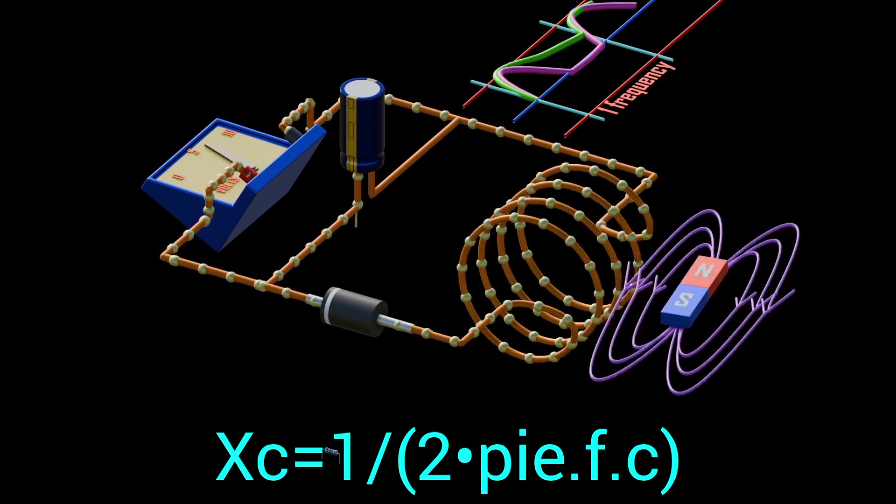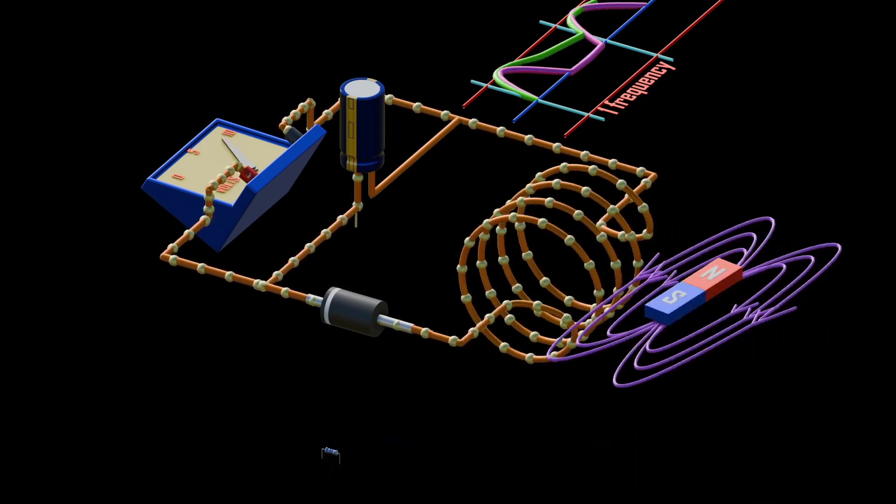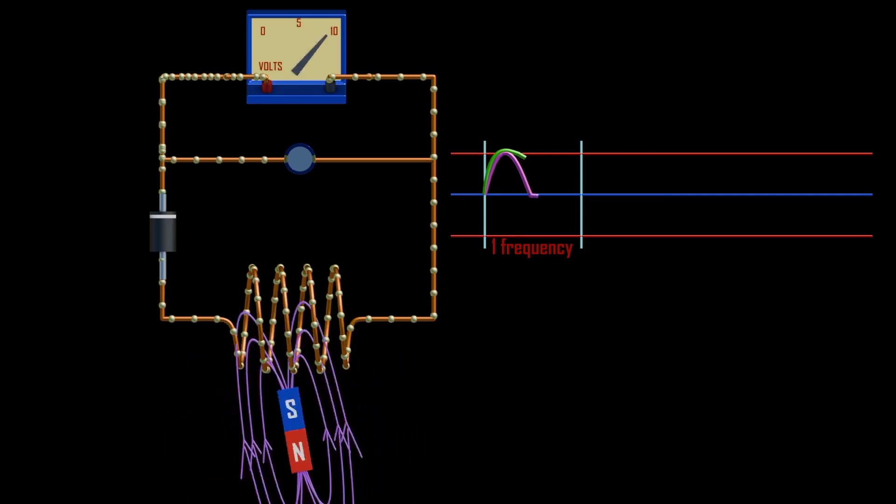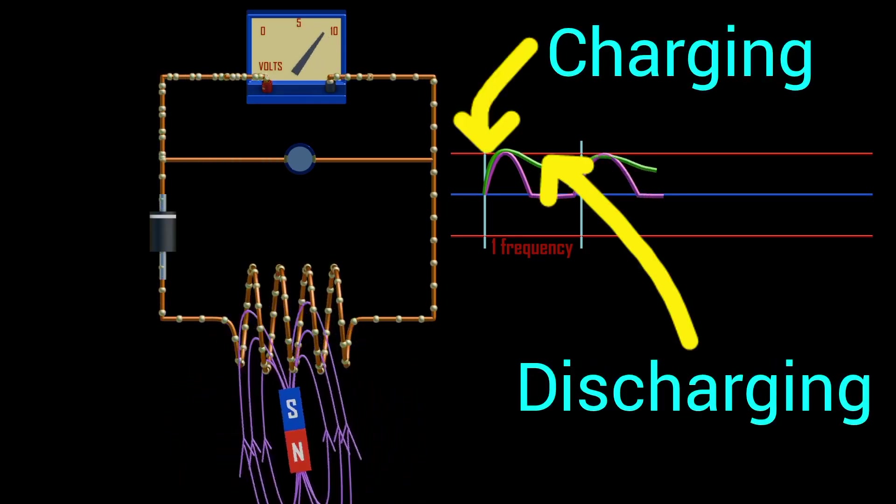Therefore, to obtain the best possible filtering, the capacitor should be as large as possible. Another consideration is charging and discharging time of the capacitor should charge fast and discharge slowly.